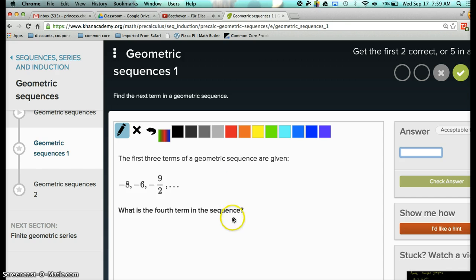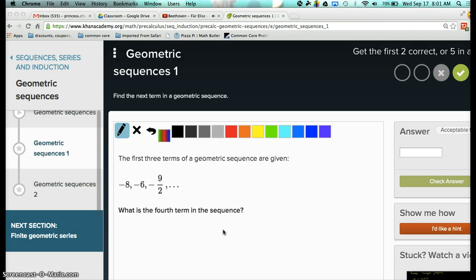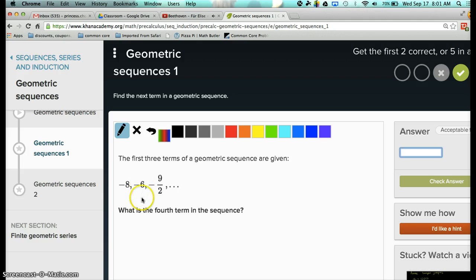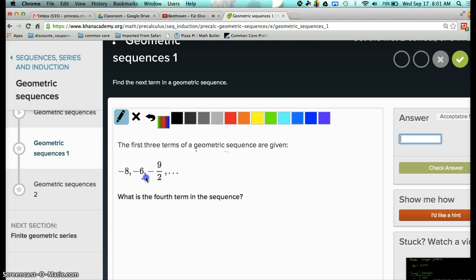The first three terms of a geometric sequence are given. What is the fourth term? Geometric, you already know, means you've got to multiply by the same number every single time. So what did you have to multiply to negative 8 to get to negative 6? No, negative 8 times 2 is negative 16, not negative 6, right? So when you are not sure, and they already told you that this is a geometric sequence, in order to find out what number you are multiplying every single time, all you have to do is go back number divided by the front number.